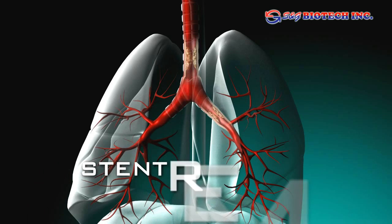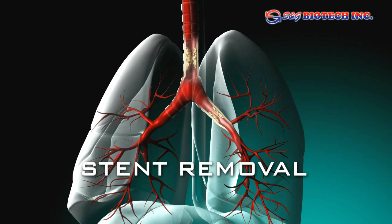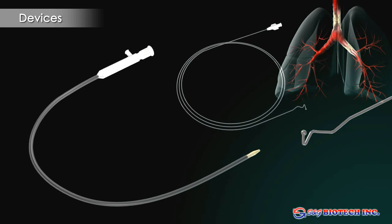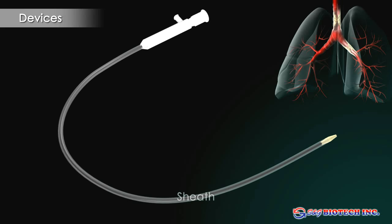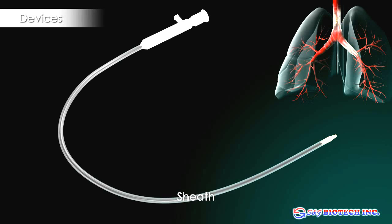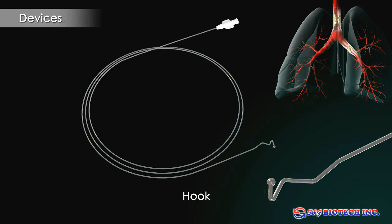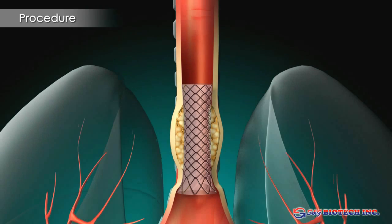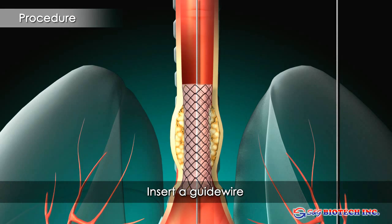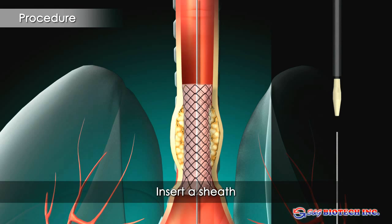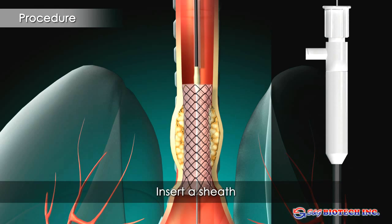Stent removal. Stents may be removed even after several weeks. First, insert a guidewire through the stent. Then, insert the removal sheath over the guidewire into the top of the stent.